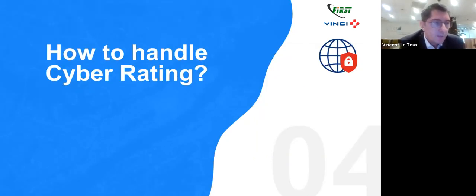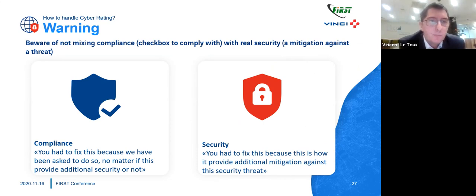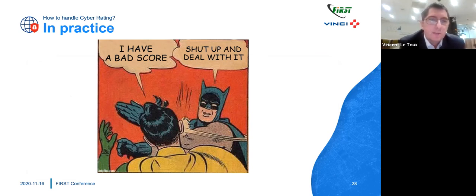Given these facts, how can you handle cyber rating and improve it? You need to pay attention to two things: compliance and security. For compliance, you have to fix it even if it seems stupid. For security, fix it because it provides additional mitigation — and even if it's listed, you may have another workaround. In practice, you present it to management, management is not okay, you have to speak with the people below, and in practice there is no change — one, three, six months later. It's a human problem.